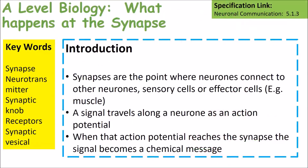Key points to bear in mind: synapses are the junctions between nerve cells. The nerve impulses travel across them using a neurotransmitter. That neurotransmitter is called acetylcholine, and it's all to do with action potentials reaching the end of the presynaptic neuron and being generated in the postsynaptic neuron.